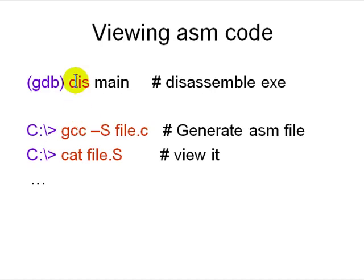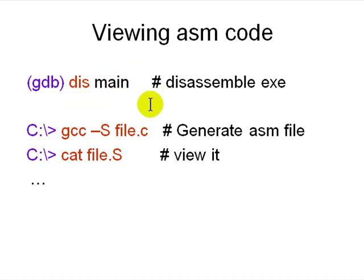To see the object code in assembler, say disassemble main — main is a symbol for the main function and it will show you the assembly code inside it. Alternatively, if you have the source code, compile with gcc -S to get an assembly file and view the .s file directly.